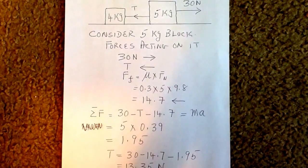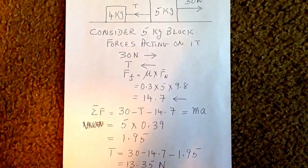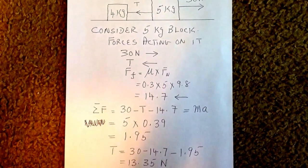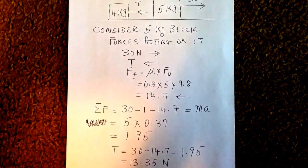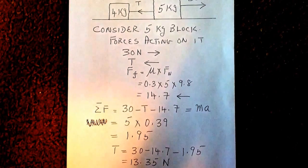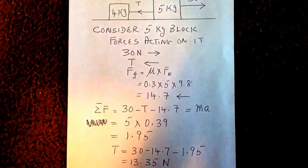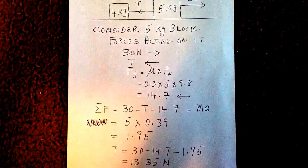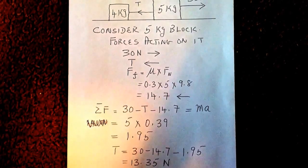So we have the equation 30 minus T minus 14.7 equals 1.95. From which we get the tension to be 13.35 newtons or approximately 13 newtons.